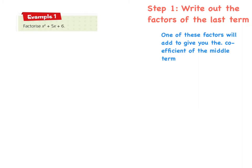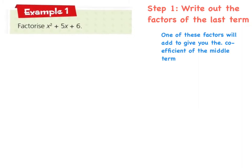Okay, so our first example here today is question 1, or example 1. Factorise x² + 5x + 6. And we're going to follow simple steps. The first step is write out the factors of the last term. So I'm going to just look at number 6 here, and I'm going to write out the factors. Remember, factors are parts, so the parts that make up 6 are 1 and 6, and 2 and 3, and that's it.